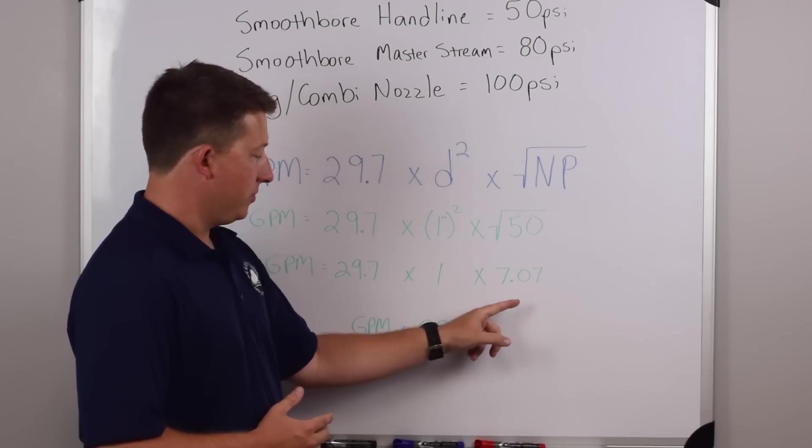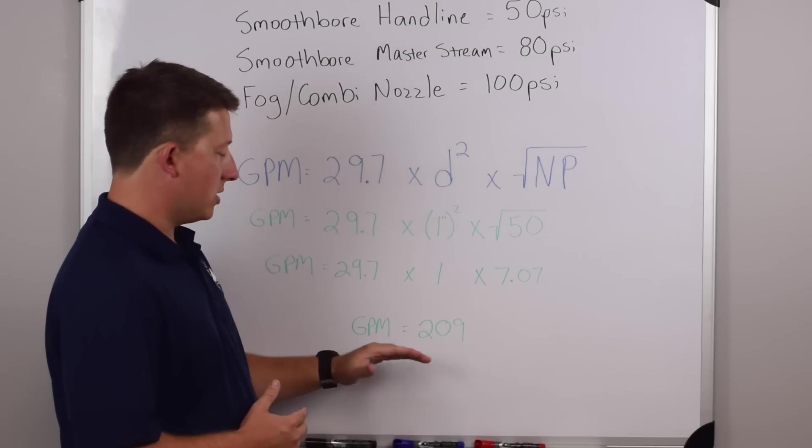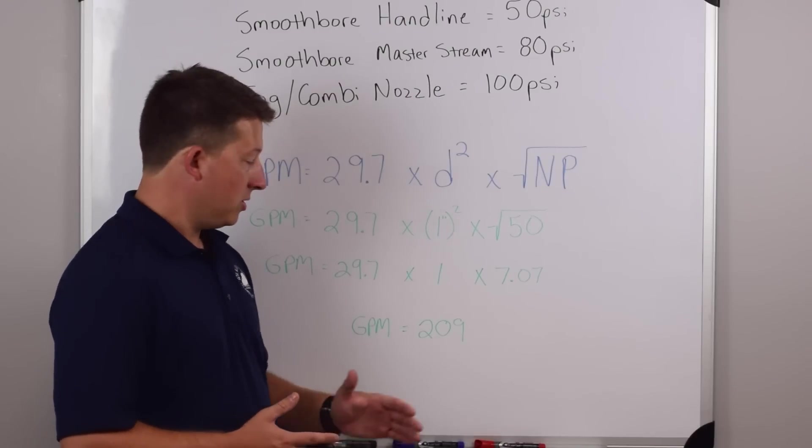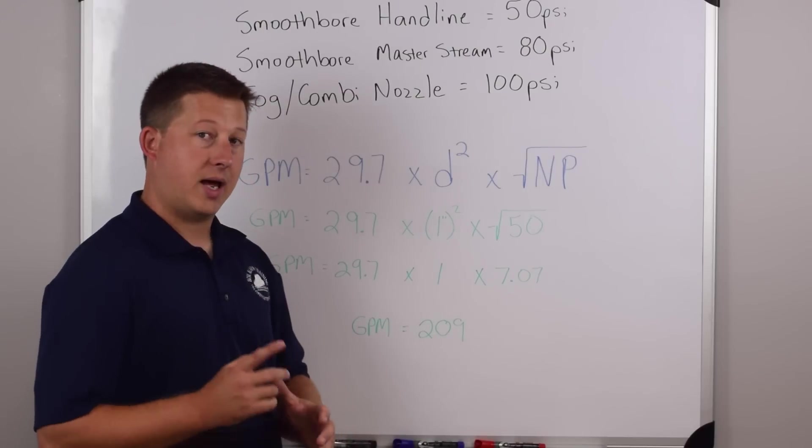And when we multiply everything together, it tells us that the GPM is 209 gallons per minute. So that's our flow out of a one inch hand line tip.